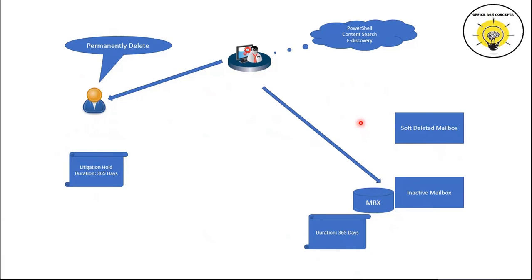By enabling litigation hold on a mailbox, you can preserve the entire mailbox or its contents such as emails and calendar items. If a user deletes any item, it will be moved to the Purges folder where it will be preserved for the litigation hold duration. The administrator can restore that email or calendar item using Content Search or eDiscovery. Similarly, if the entire mailbox is deleted, it will be preserved in inactive mailbox state even if the associated user account is purged, and the administrator can recover it using PowerShell, Content Search, or eDiscovery.